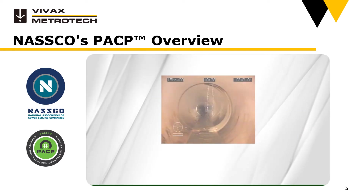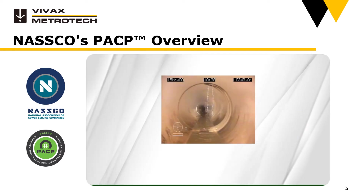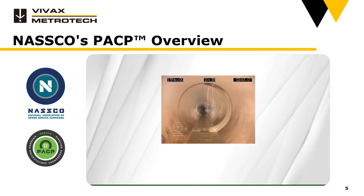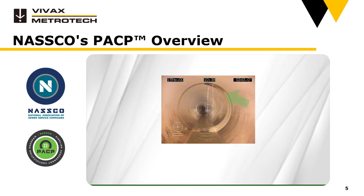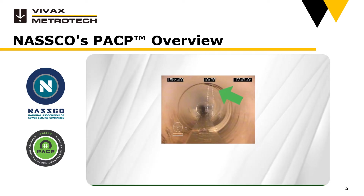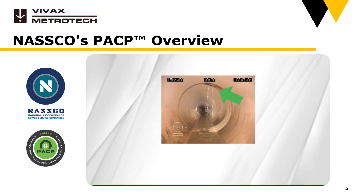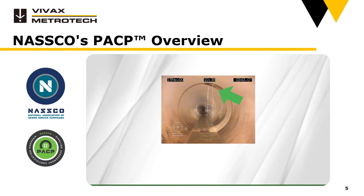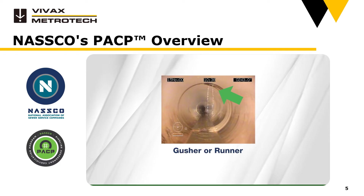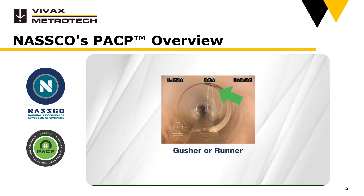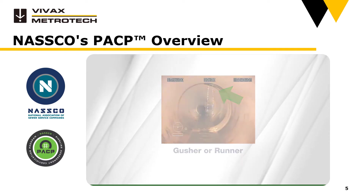Let's choose a code for one more image before we continue. This image shows infiltration, but how is it classified? Choose one: gusher or runner? Again, we will provide the correct answer later.